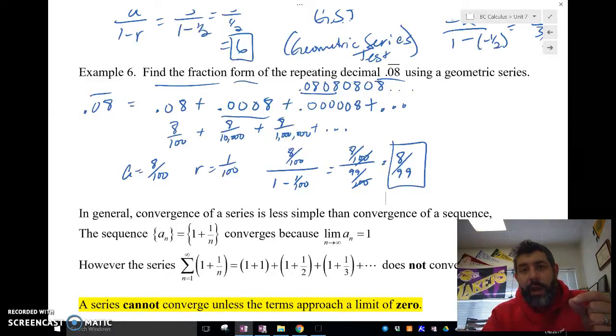A series, if the limit goes to anything other than zero, it might not converge. In fact, a series cannot converge unless the limit approaches zero. So the terms must approach a limit of zero for this series to converge. So convergence of series is not as easy as convergence of sequences. And because so, we actually have to do quite a few number of tests to see if the series, in fact, converges. We know one.